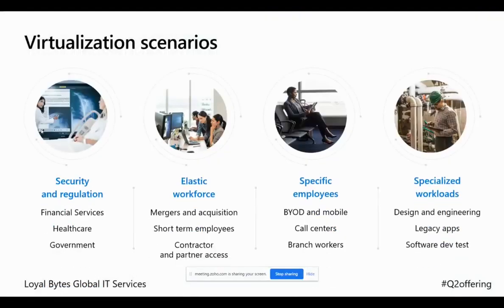When we talk about virtualization scenarios, giving users the flexibility to work from anywhere requires many parameters to be considered — otherwise remote working becomes a highly vulnerable option. The very first concern is security and regulations that typical organizations follow. Pharmaceutical companies, medical organizations, financial institutions, banking sectors, and government organizations dealing with critical user data may not always want everything coming out of the cloud, because they don't want their data accessed from over the cloud.